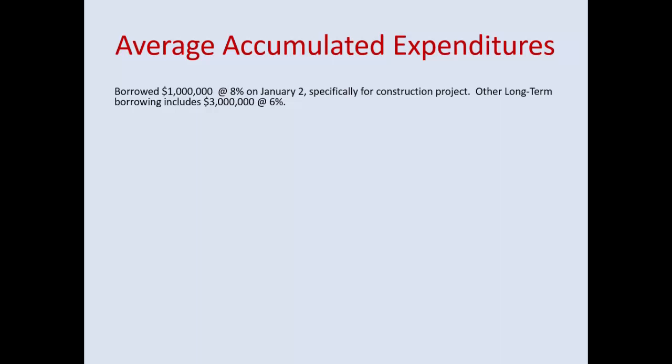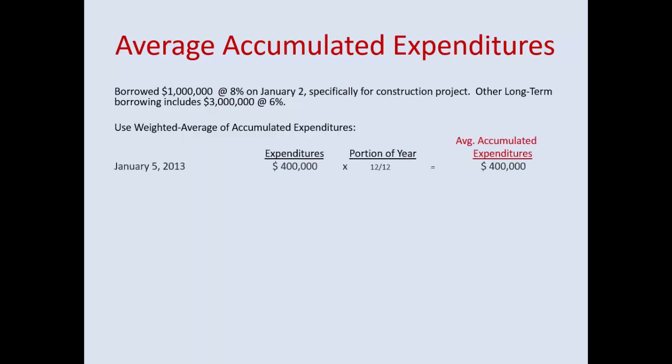For example: you borrowed one million dollars at 8% on January 2nd, specifically for a construction project, but you also have other long-term borrowing of three million at 6%. You use the specific loan first. To calculate weighted average accumulated expenditures: on January 5th, you spent $400,000 — that's the entire year, 12 months. Average accumulated expenditures for that amount is $400,000 for the full year. Then in April, $350,000 times nine months (April through December).